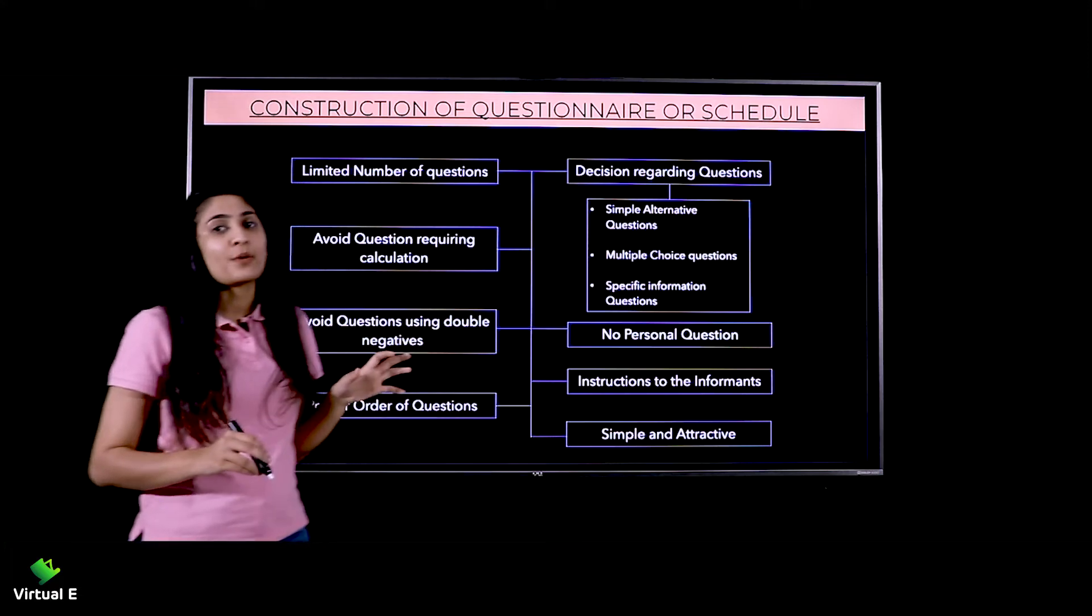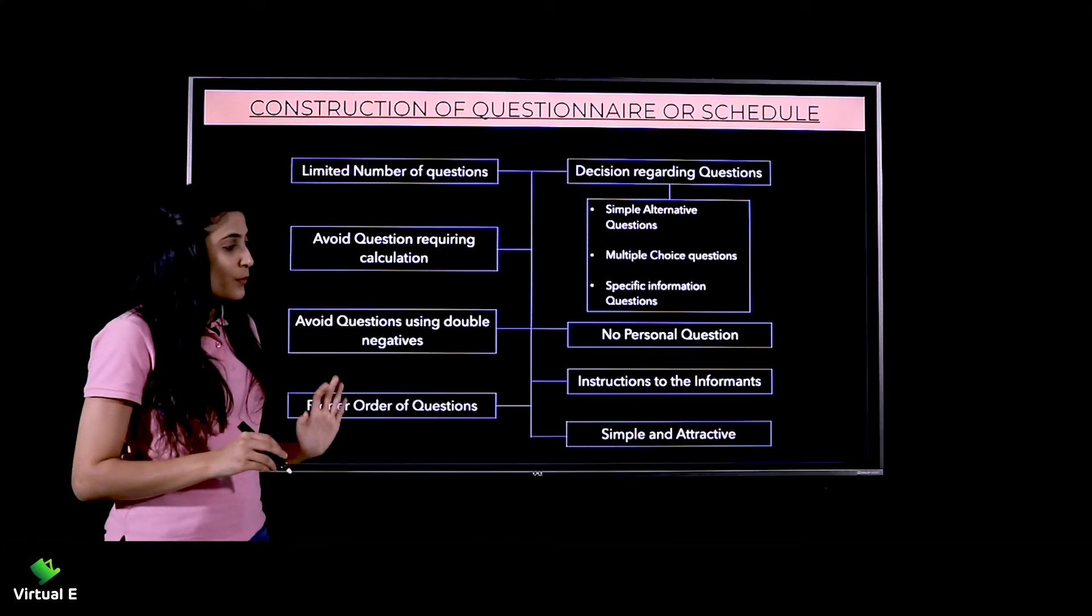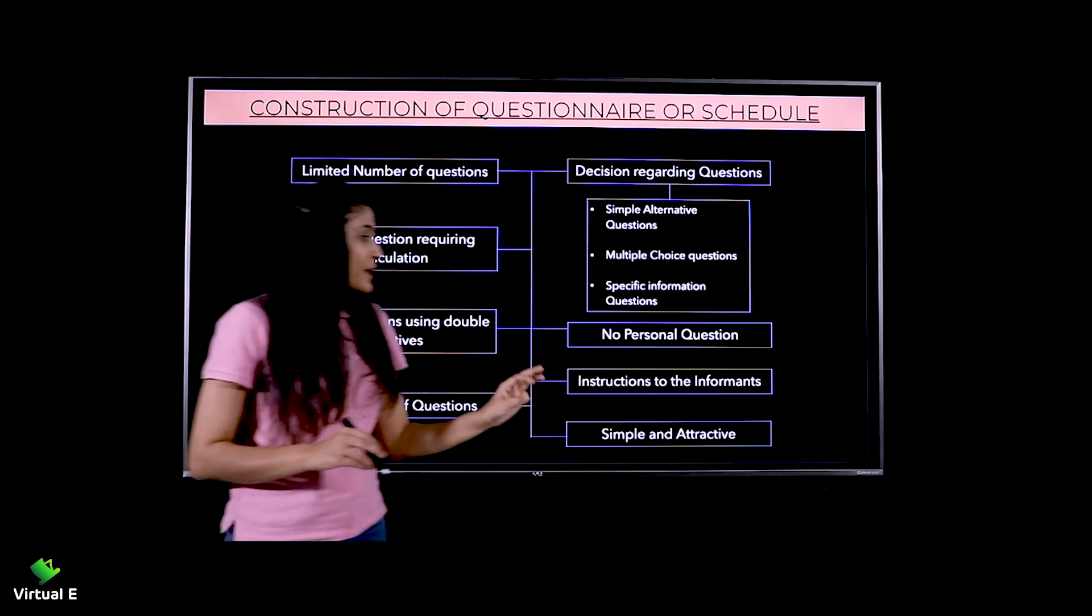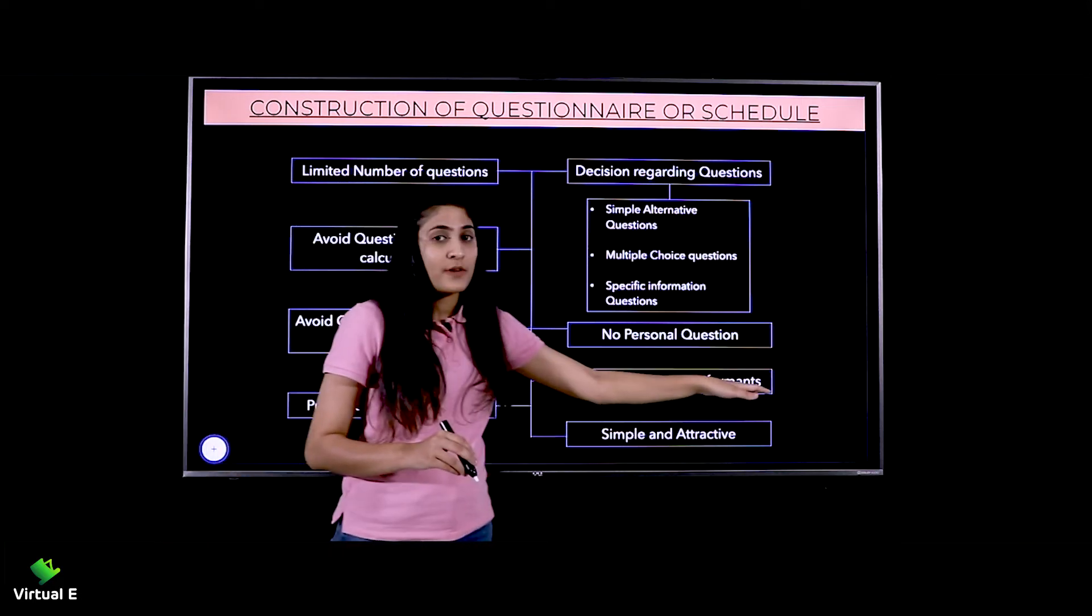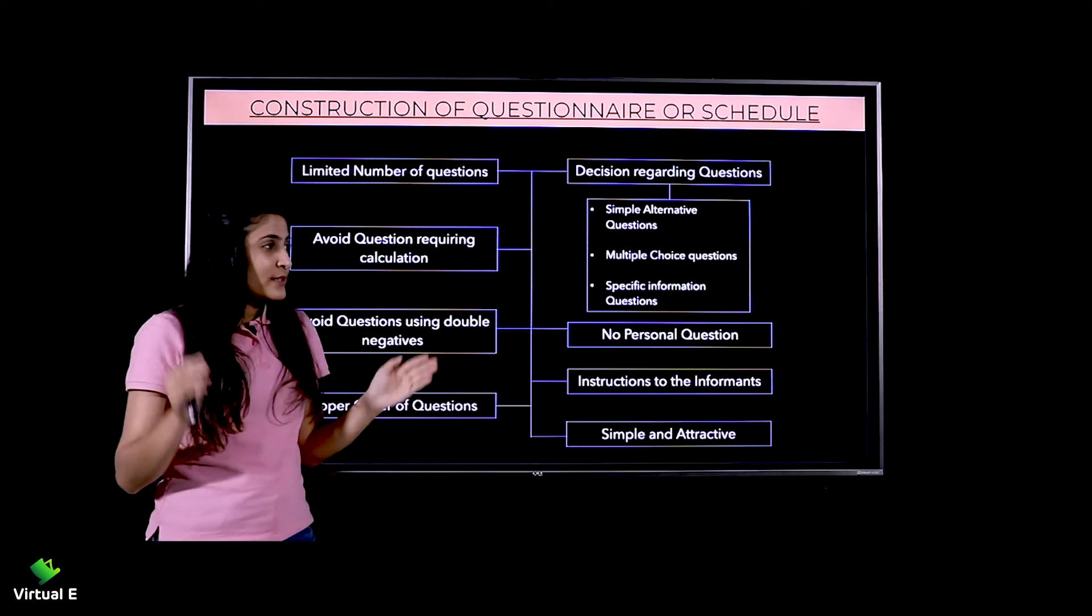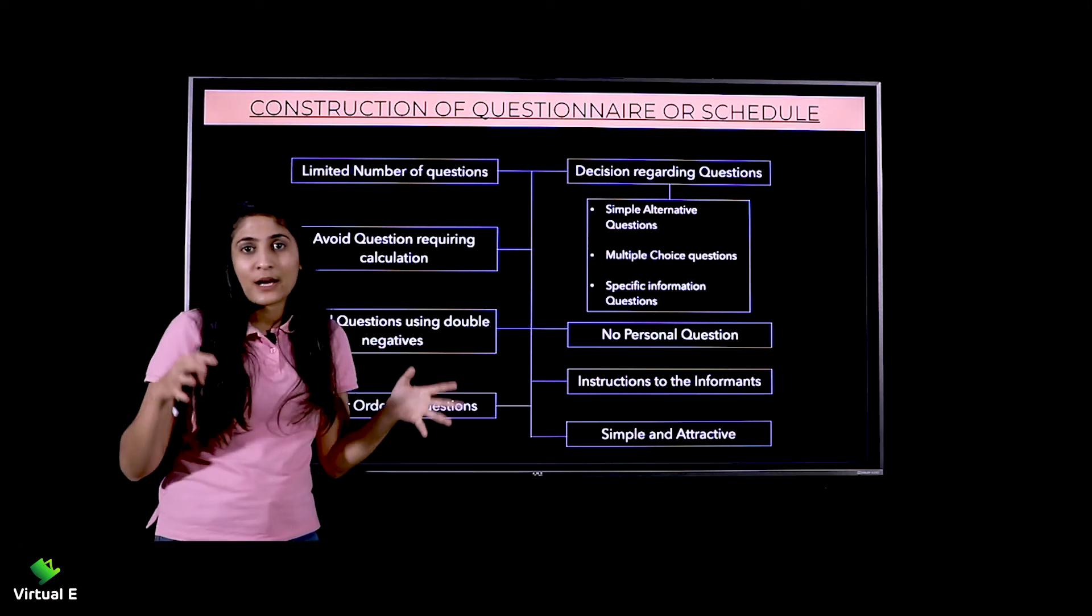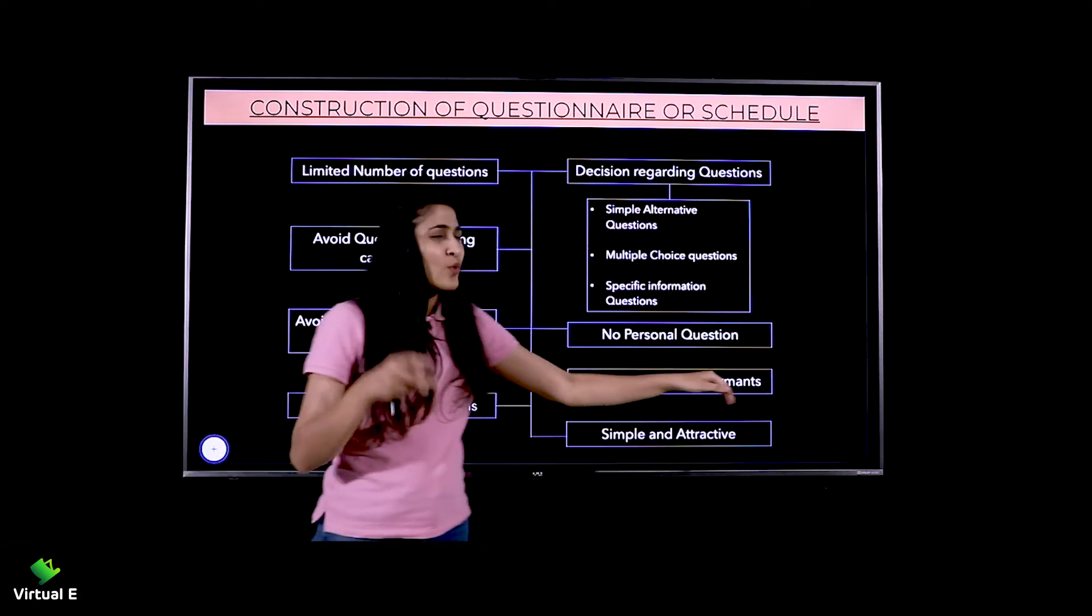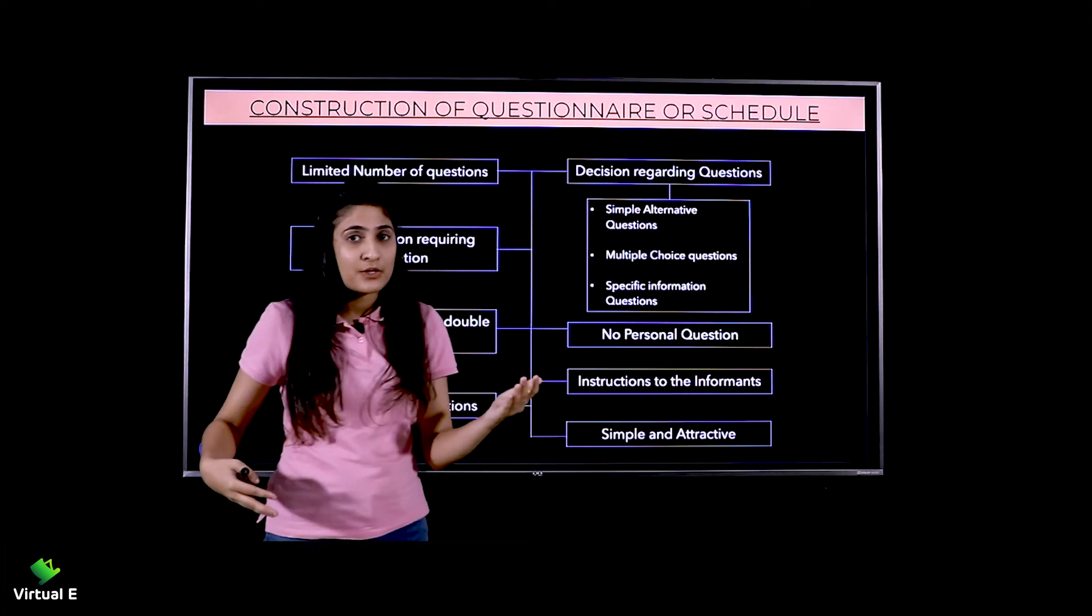Next is instructions to the informants. There should be some specific instructions. You can mention at the end why you're collecting this information - that the information will remain with you, why you're collecting it, and please submit. Two or three instructions make it easier for them to understand why the information is being collected.